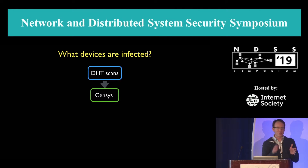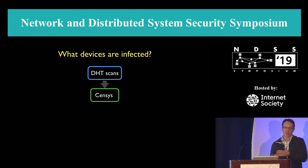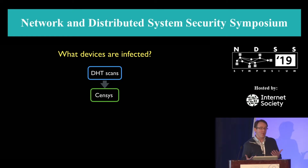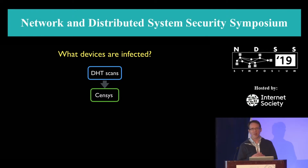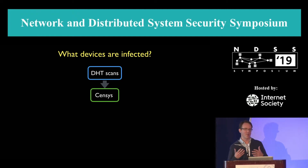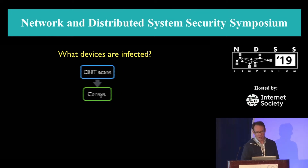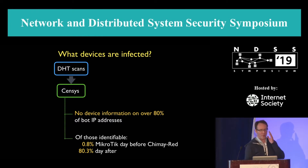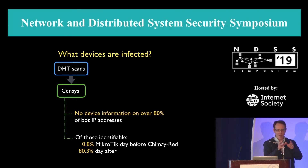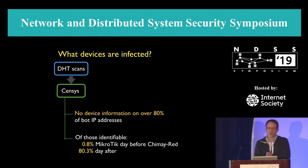Whereas Chimay Red and G-Pon targeted very specific routers, Hajime has other access methods that are more device-agnostic. For instance, like Mirai, it scans the internet for open telnet ports. We'd like to know what devices actually get infected. To answer that, we take our DHT scans and intersect them with census datasets — which massively scan the internet to understand its current state and services. Unfortunately, census was unable to provide device information on over 80% of our bot IP addresses. However, looking at identifiable addresses one day before Chimay Red and one day after, the results are quite spectacular: one day before, census marks only 0.8% of our dataset as MikroTik, and a day after that shoots up to 80%.